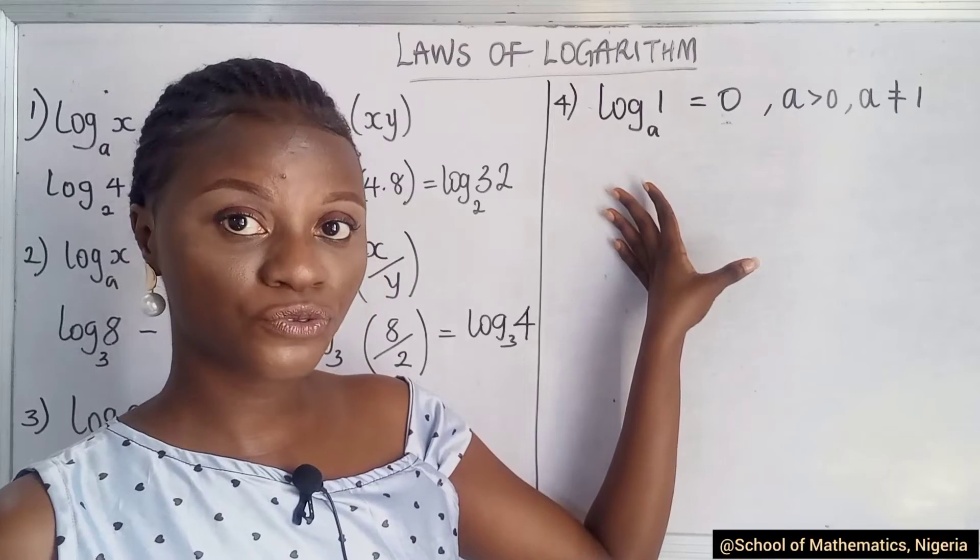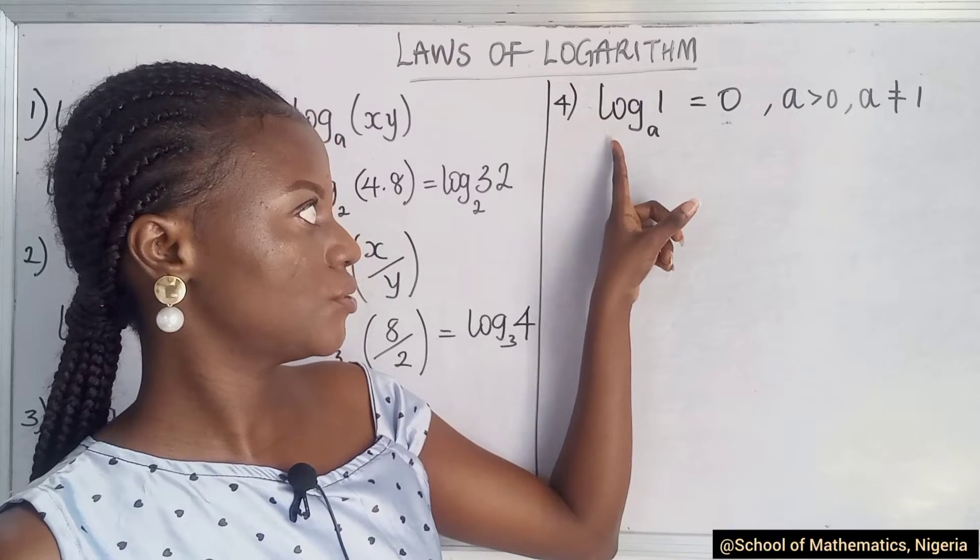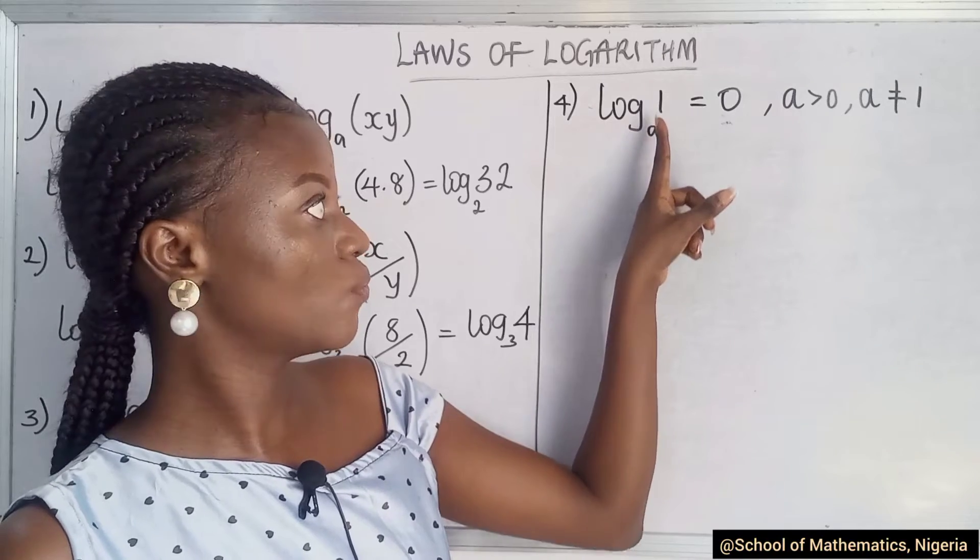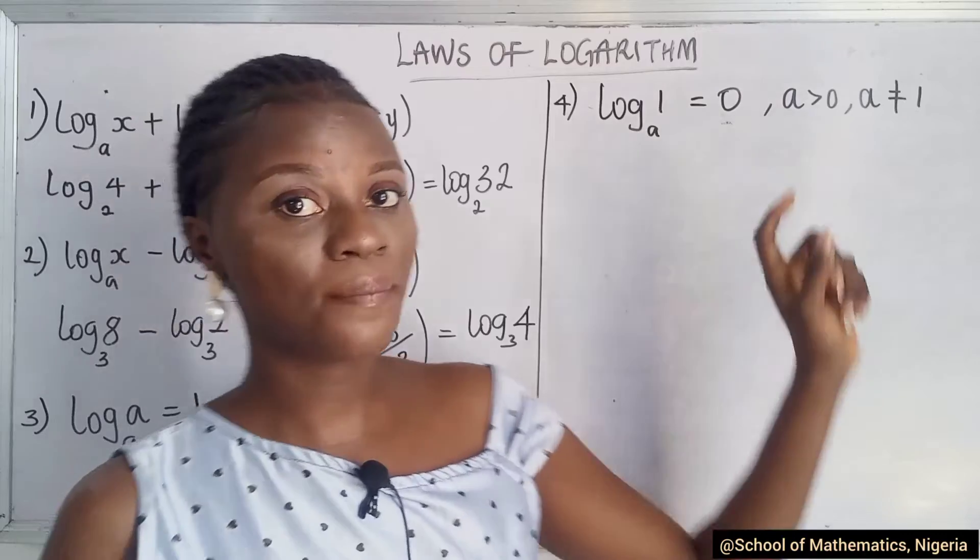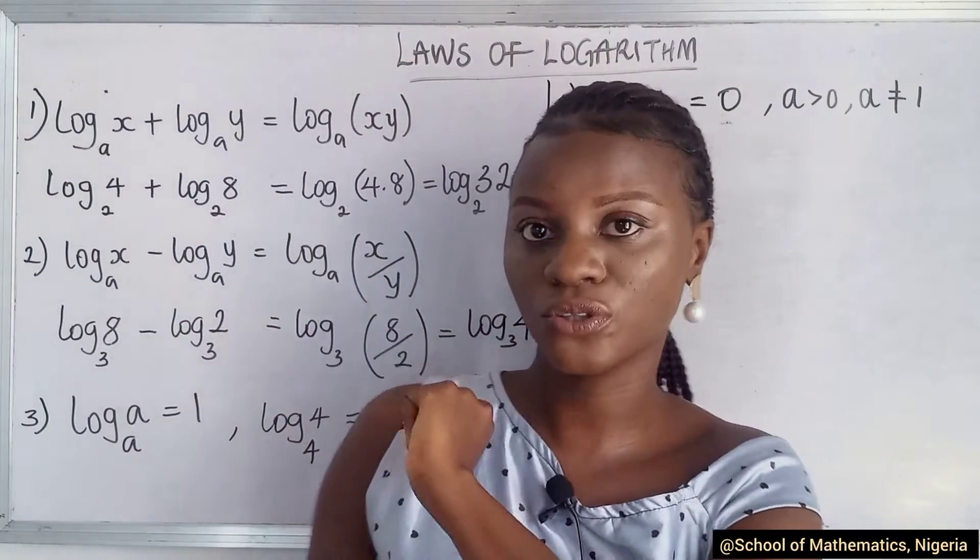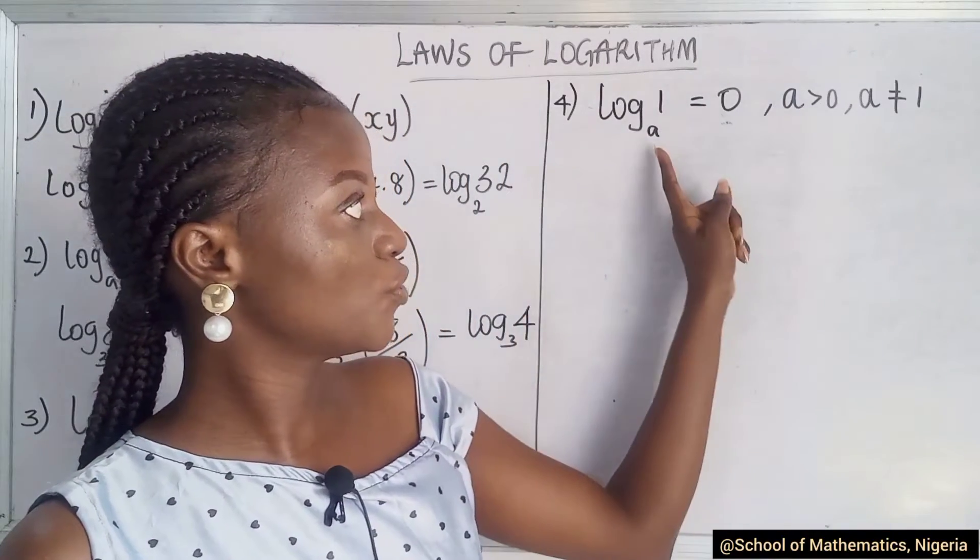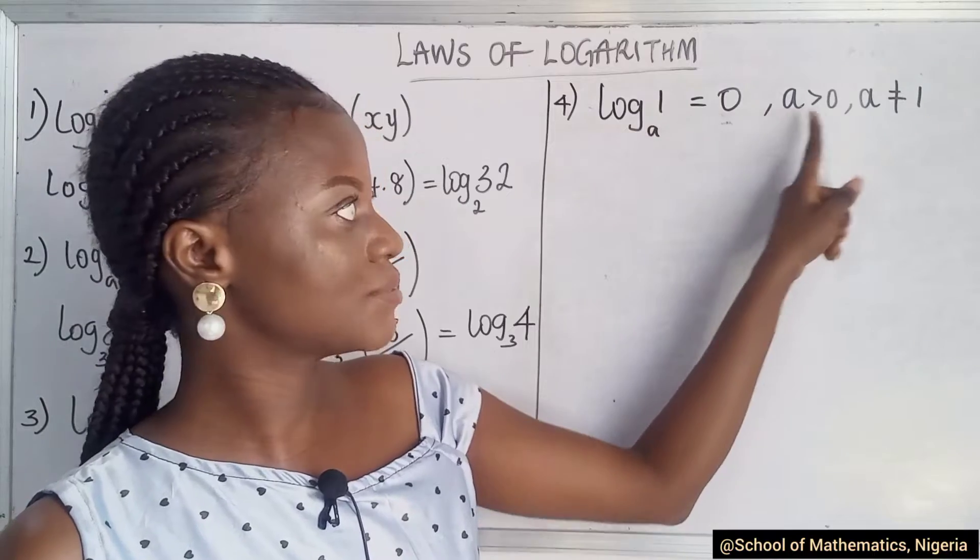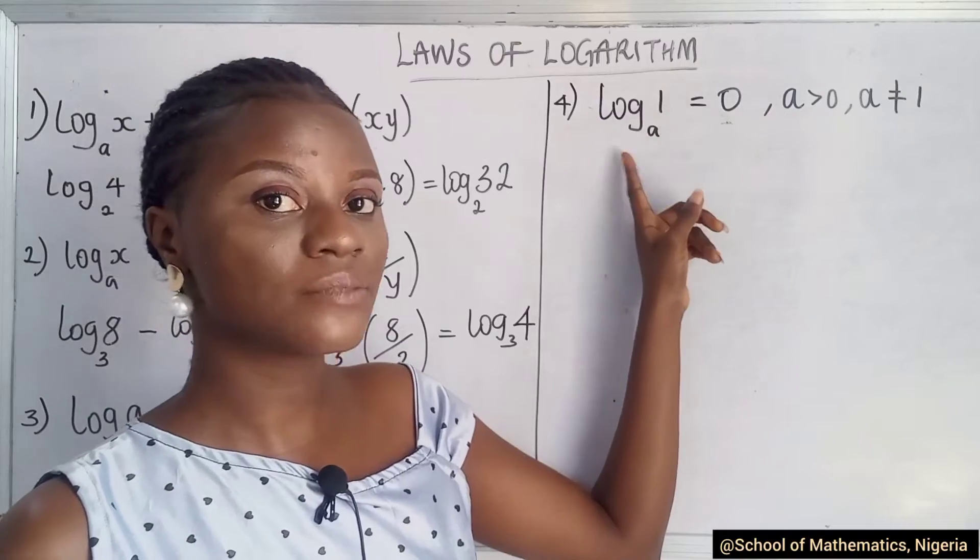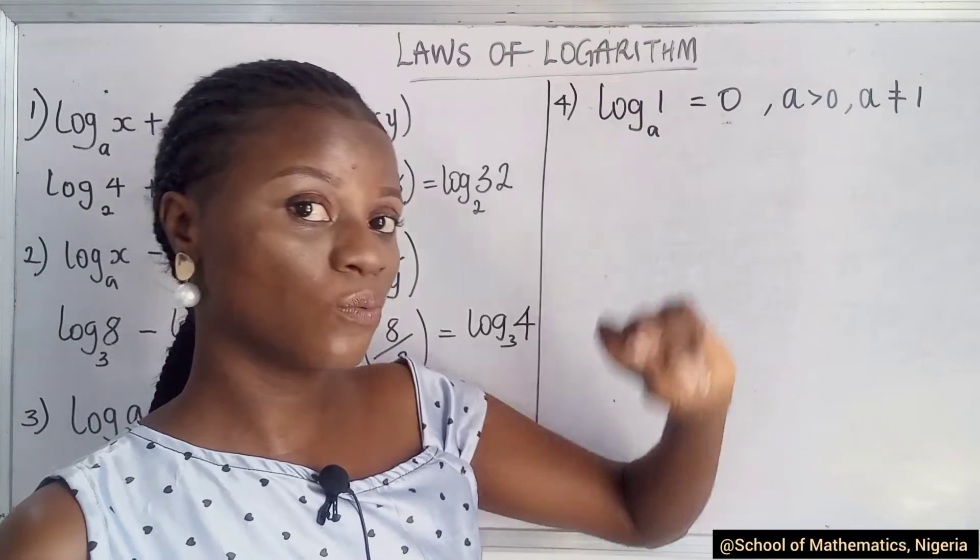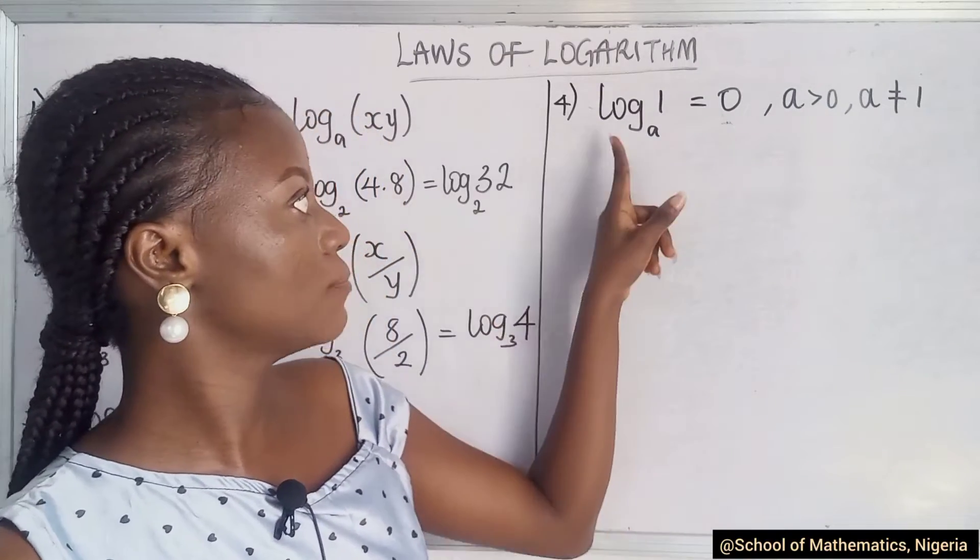So for our fourth rule, we have this condition that says the log to a value of 1 is 0. Now take note of these conditions. This condition applies to the first and second condition. Your value for your base value has to be greater than 0 and not 1. Please take note of this condition. It has to be greater than 0 and not 1, not equal to 1.